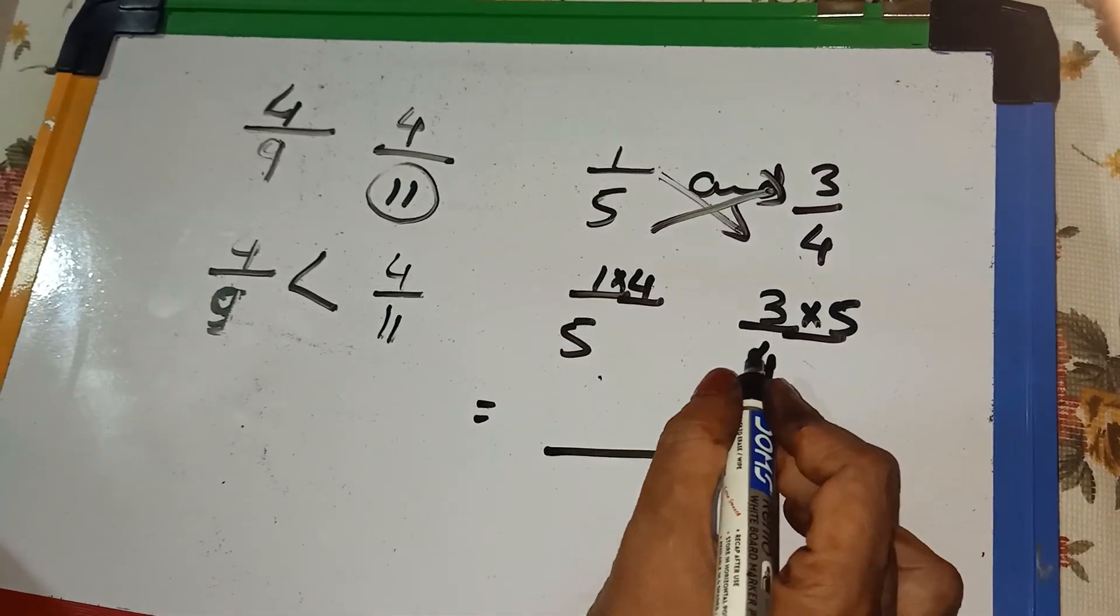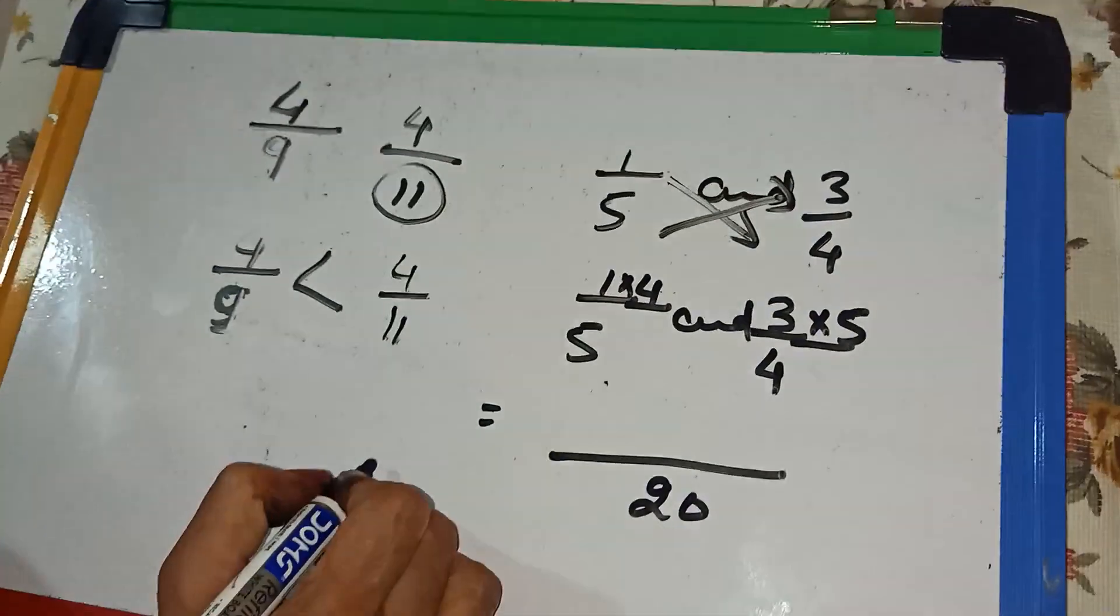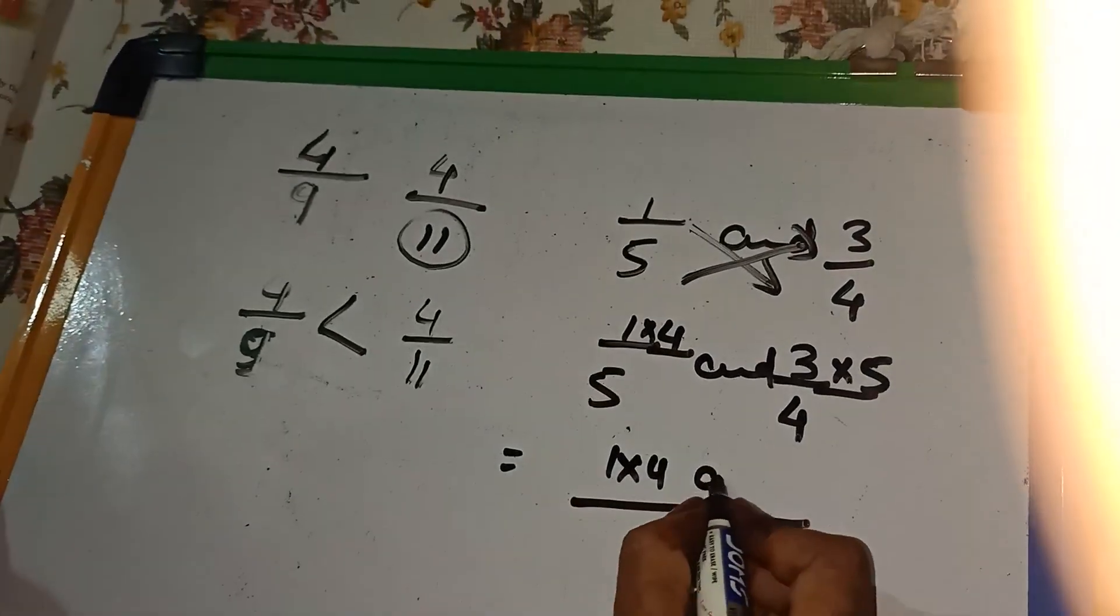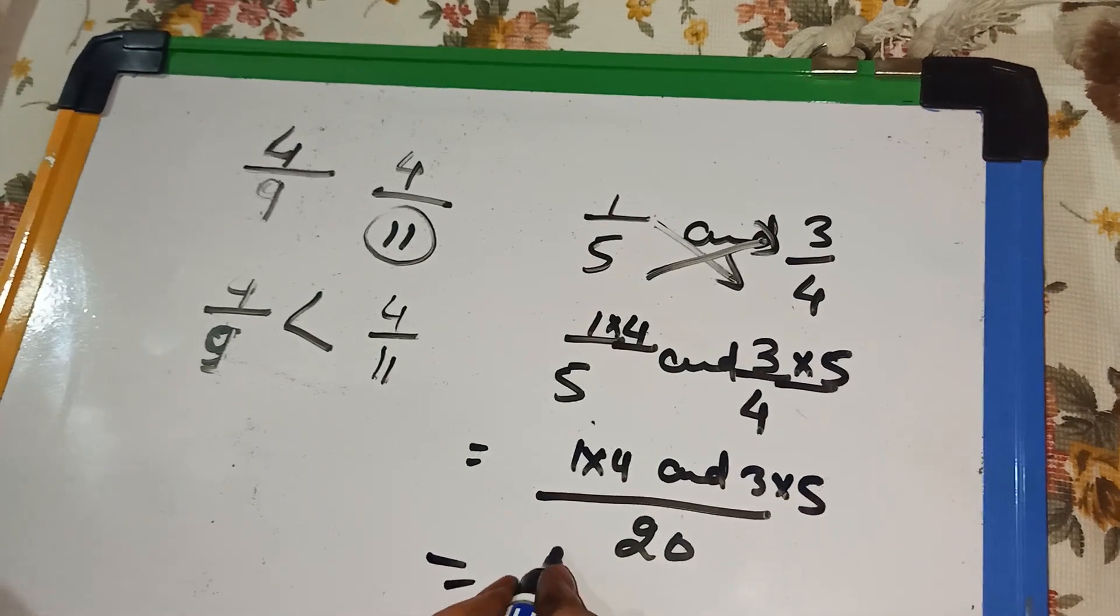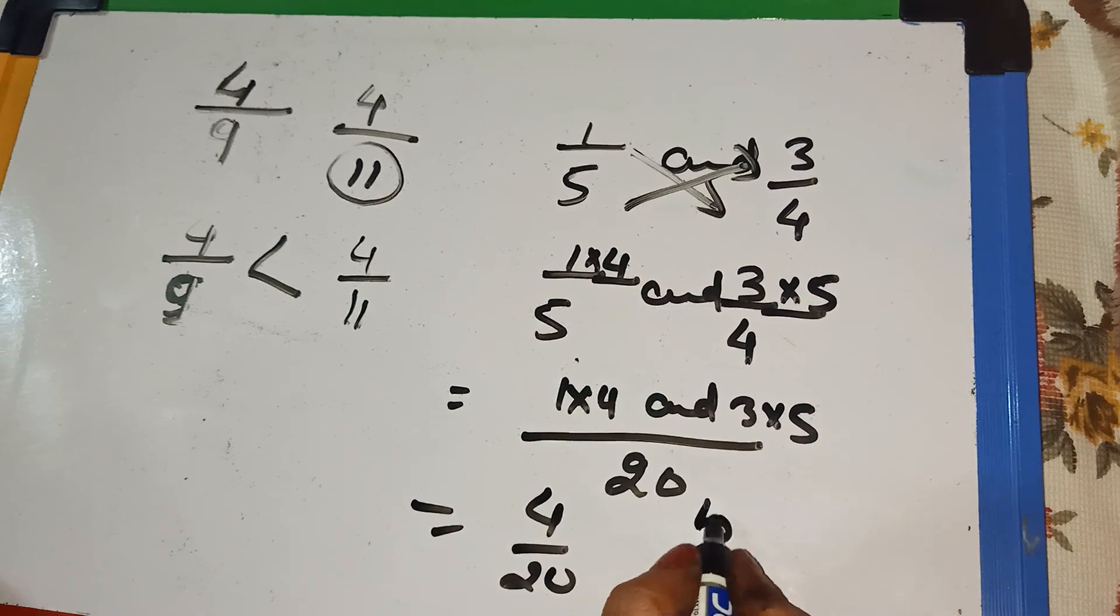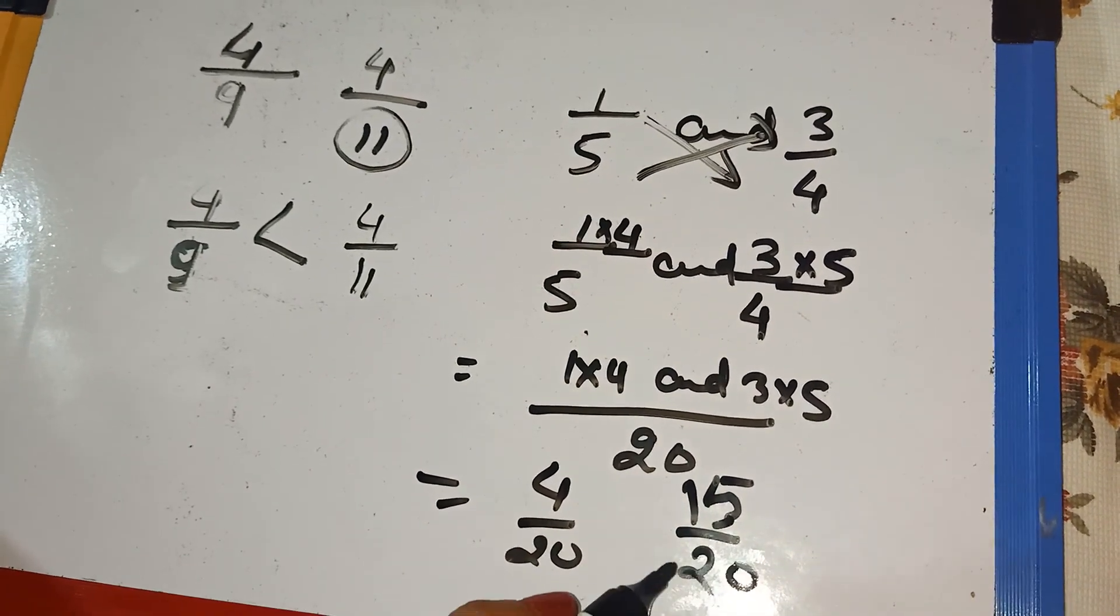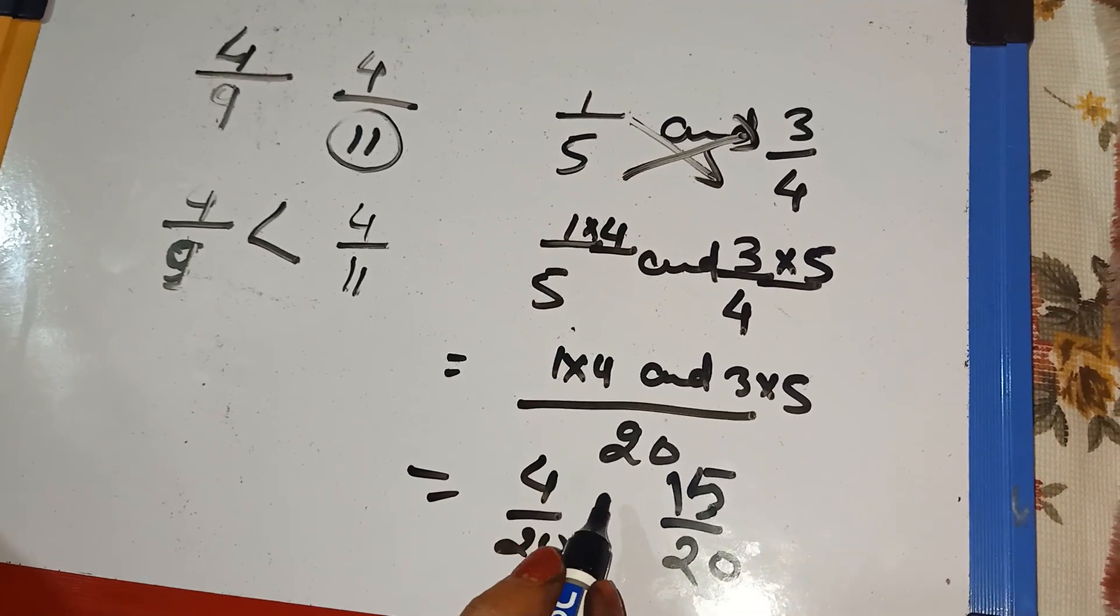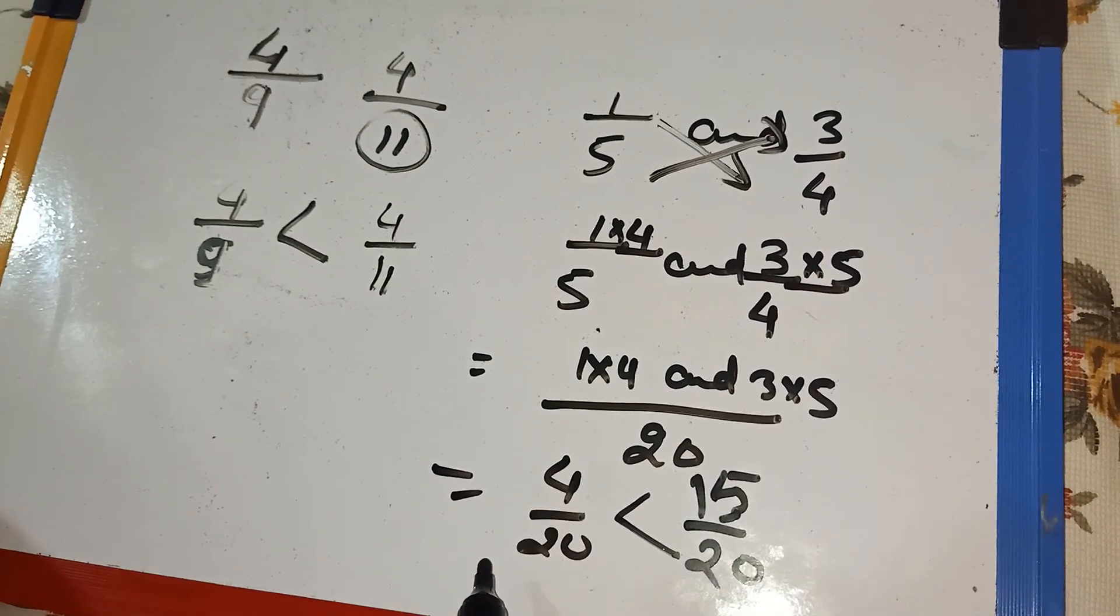And after that, we take the LCM of this number. And LCM is 20. So, 1 multiplied by 4 and 3 multiplied by 5. And we can write 4 by 20 and 15 by 20. And after that, you get the same denominator. And after that, you easily find out the 15 by 20 is bigger than 4 by 20.